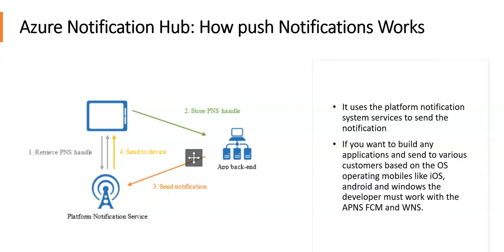Looking at the diagram: first, an application decides it wants to receive notifications, so it contacts the PNS for the target platform where the app is running and requests a unique and temporary push handle. The handle type depends on the system — for example, WNS uses URIs while APNS uses tokens. The client app then stores this handle in the app backend or the provider.